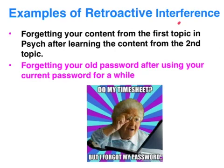A good example of this is when material that's been well learned from the past has been subsequently interfered with by new content, particularly when it's similar in nature to the previous material. Think about content you might have learned in science, history, or geography in your earlier years and how much of it you can't recall because of the interference of other humanities or science subjects you've learned since.